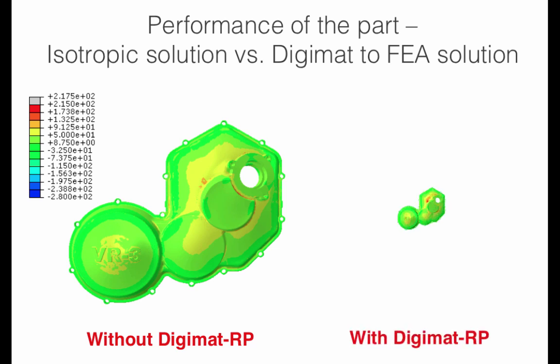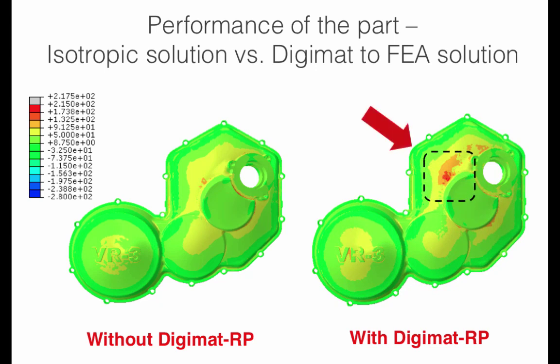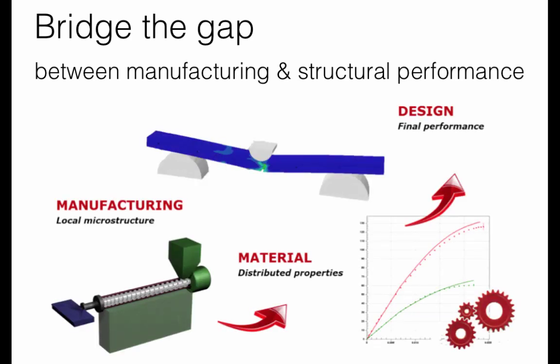With the integrative Digimat RP solution, new critical areas are identified in the part that are neglected in the isotropic approach. The results then allow you to improve the design and the manufacturing process in order to optimize your design. This integrative approach can give you systematic answers to important questions like: Is the part producible? Where is the best performing and cheapest material that can be used in the design? Will the final design perform well in its working environment?